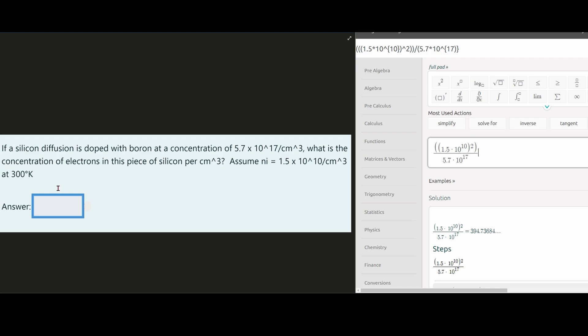If a silicon diffusion is doped with boron at a concentration of 5.7 × 10¹⁷ per cubic meter, what is the concentration of electrons in the piece of silicon per cubic meter? And then we have an assumption where Ni is given.